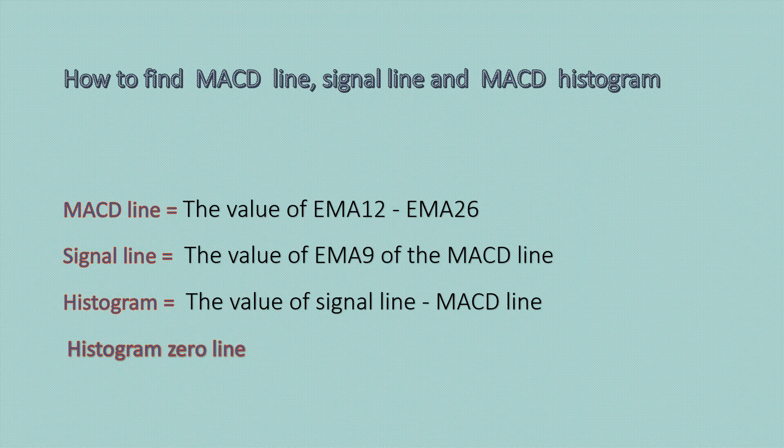The signal line can simply be obtained by the nine-day EMA of the MACD line. The histogram, which measures the momentum of the market, is obtained by subtracting the value of the MACD line from the signal line. The histogram consists of rectangular-shaped bars with two different colors — green when MACD is above the zero line, and red when MACD is below the zero line.